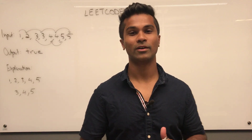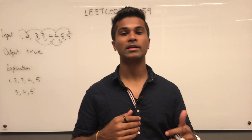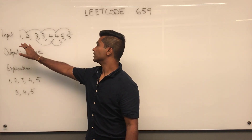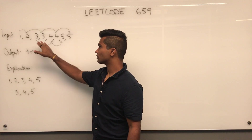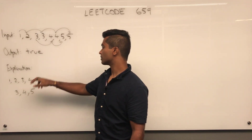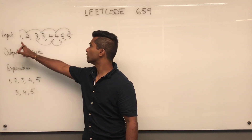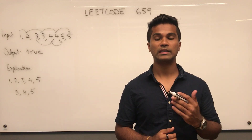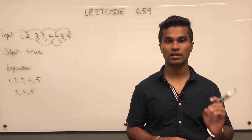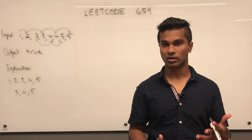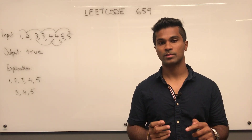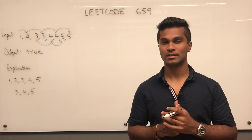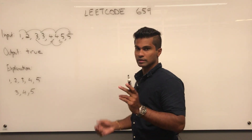What's up everyone, today we're going to go over LeetCode 659: Split Array into Consecutive Subsequences. The input is an array and we have to return true or false if we can split this array into consecutive subsequences. For example, given one two three four five three four five, you can make one two three four five and three four five. We only need to return true or false if it's possible.